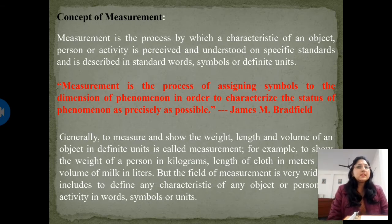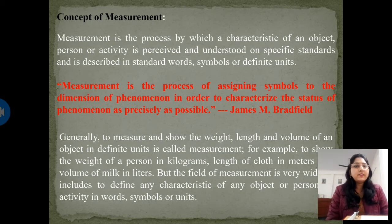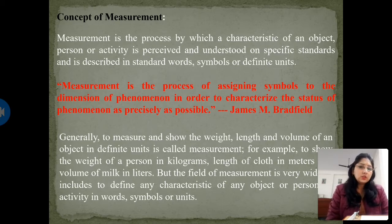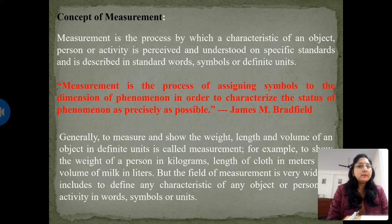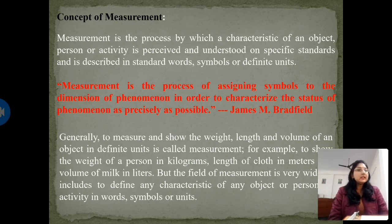Generally, to measure and show the weight, length, and volume of an object in definite units is called measurement. For example, to show the weight of a person in kilograms — we measure the person's weight and denote it in kilograms. For cloth, we denote its length in meters. For milk or liquid material, we measure the volume using a unit of volume.